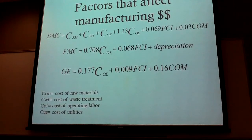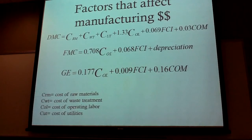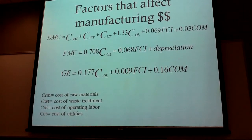So here's a breakdown. The direct manufacturing cost is the cost of raw materials plus the cost of waste treatment plus utilities cost.